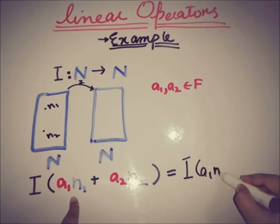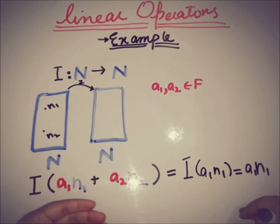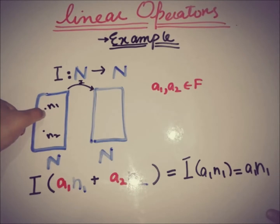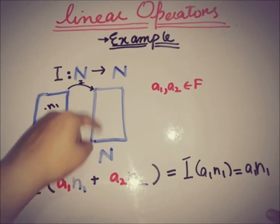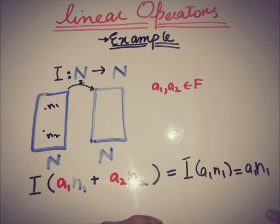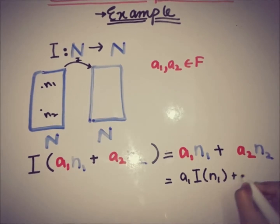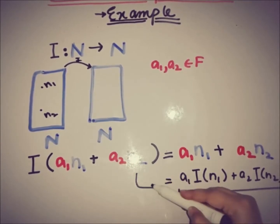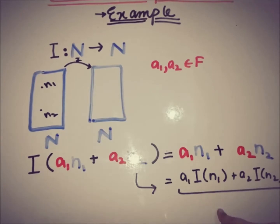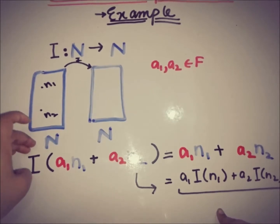We know that I is an identity operator, so I applied on a1·n1 equals a1·n1, because the identity operator returns what we put in. So I(a1·n1 + a2·n2) = a1·I(n1) + a2·I(n2) = a1·n1 + a2·n2. This shows that the identity operator satisfies the linearity condition, so the identity operator is a linear operator.